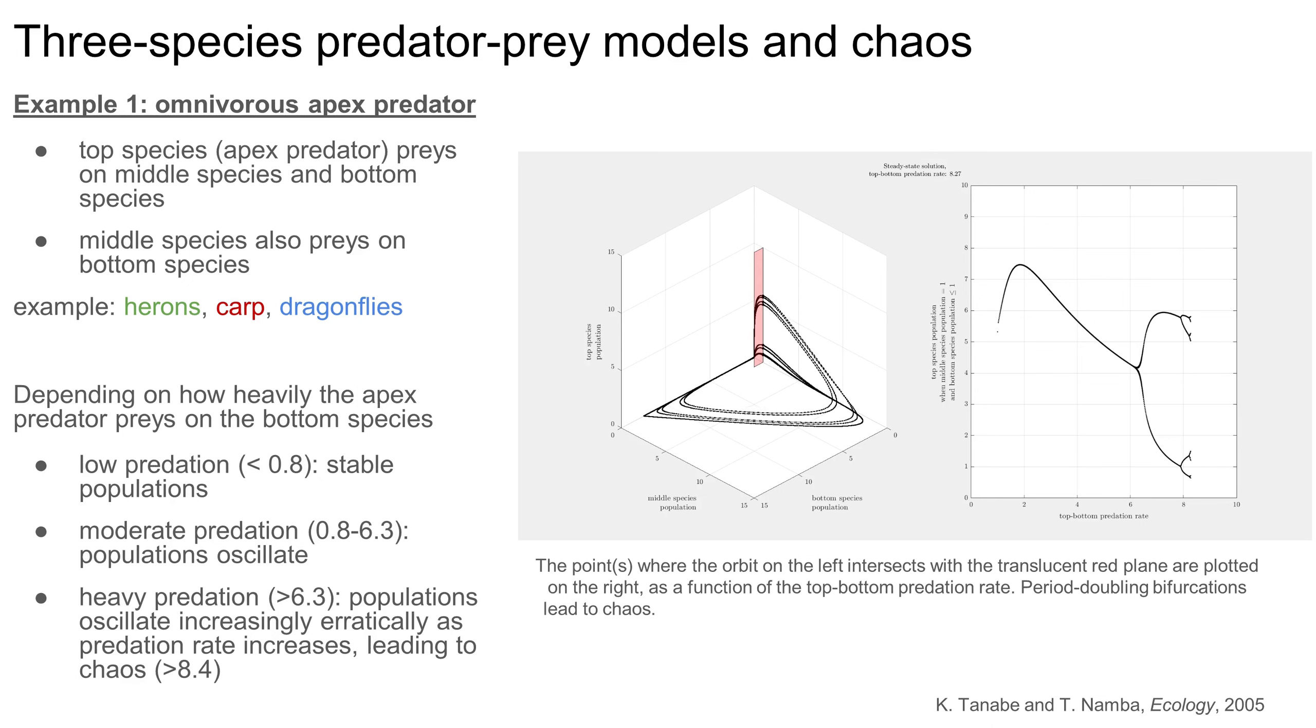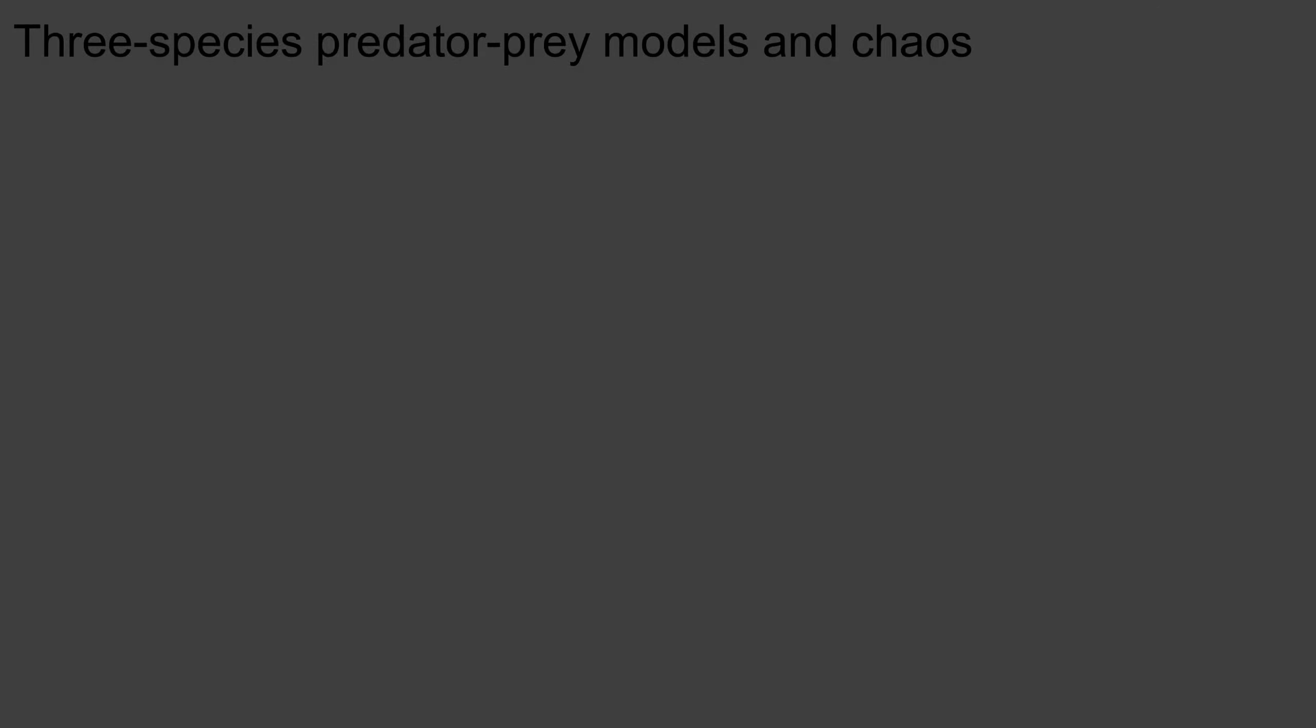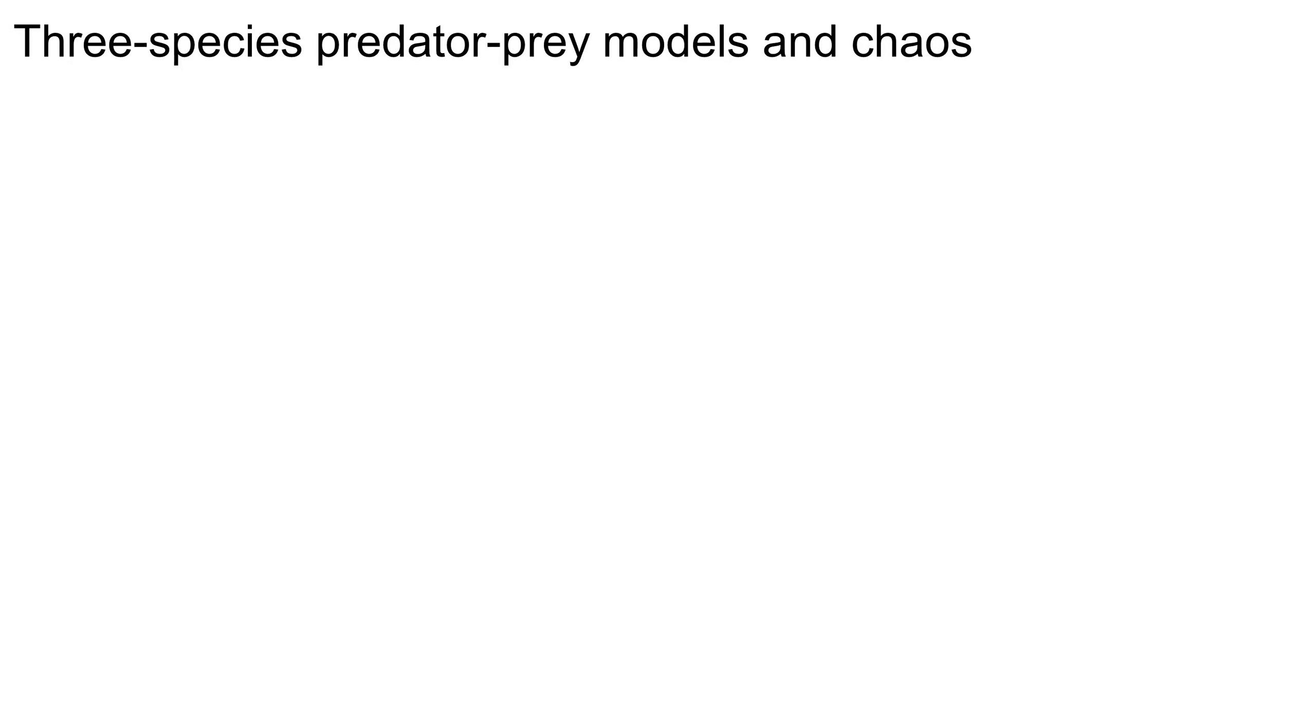As the predation rate climbs, these period doubling bifurcations cascade one after another in increasingly rapid succession until the food web is in chaos. In fact, this phenomenon is called the period doubling route to chaos, and it's a nearly universal feature of chaotic systems.